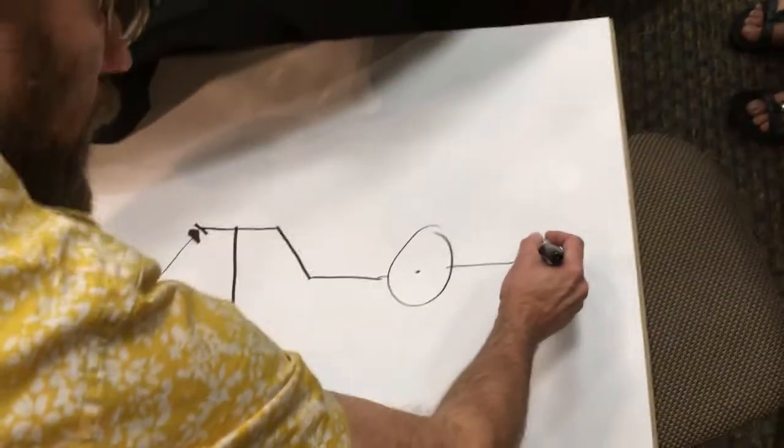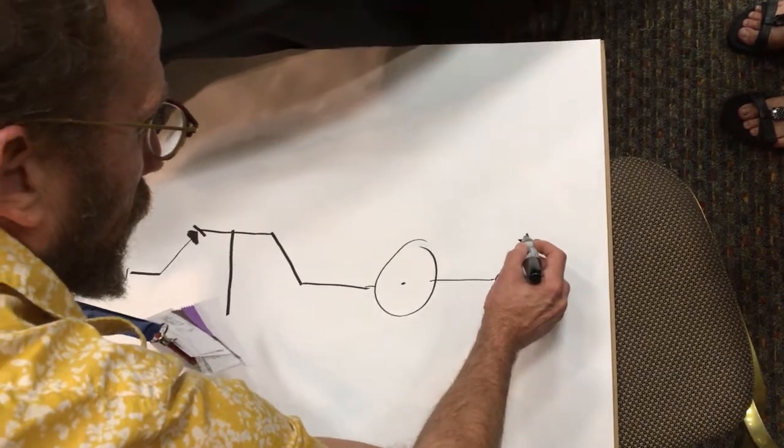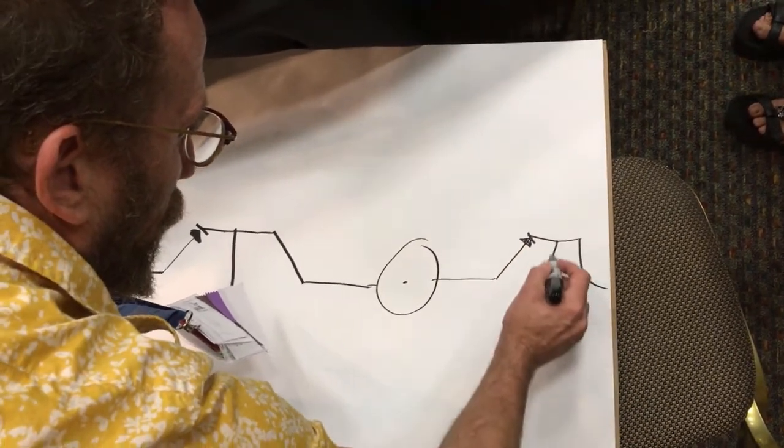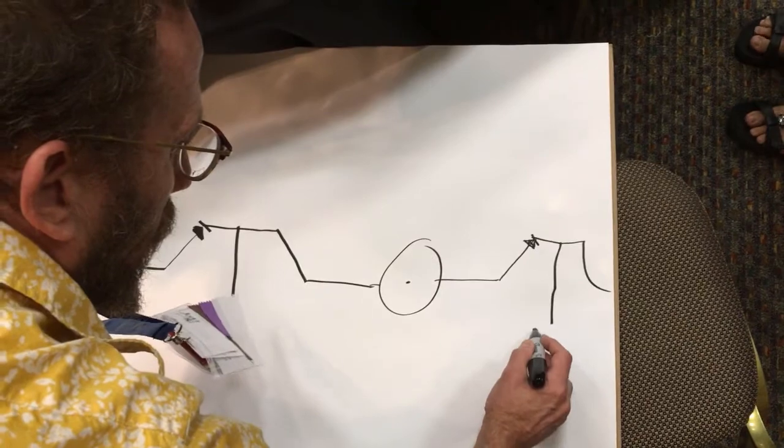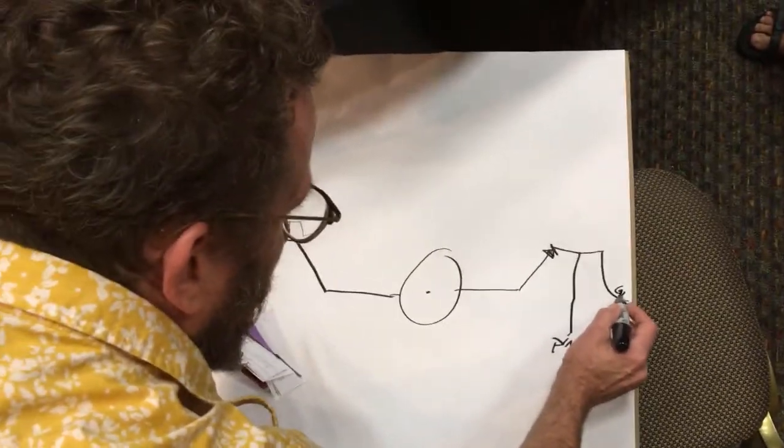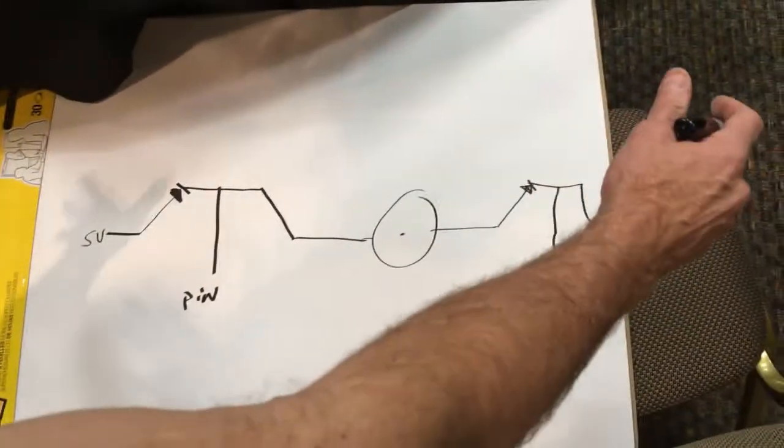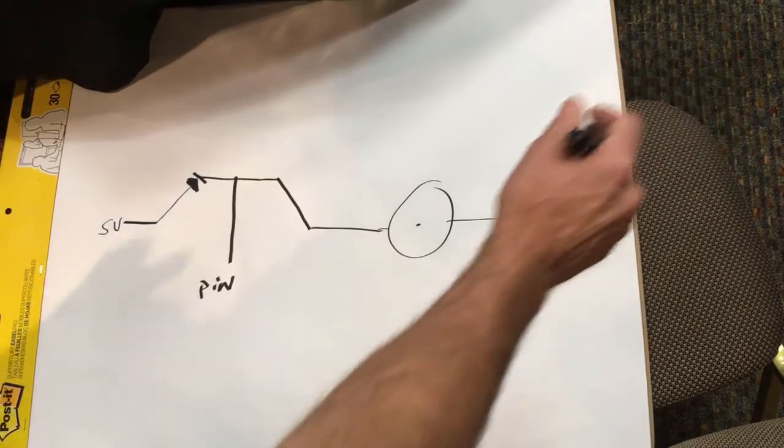If I take two of these and put them together, here's another pin, and this is GND ground right here. I now can switch the whole system from two pins.